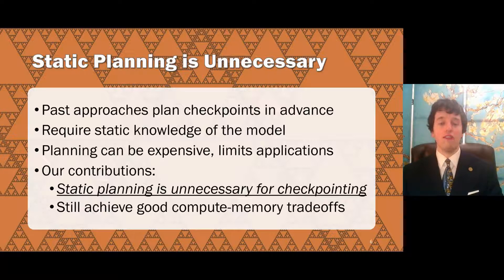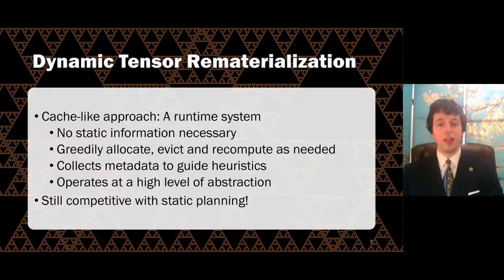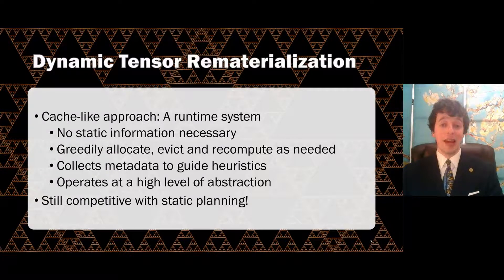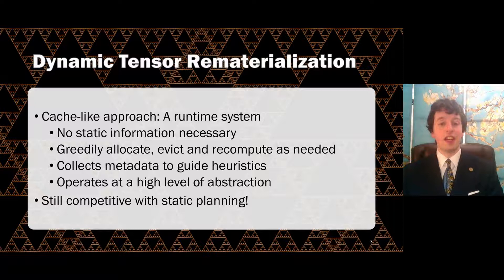Are those just costs of doing business? Must we accept the limitations of static planning? Our work shows that, in fact, we do not. And in the rest of the talk, I will describe our method for choosing values to recompute without static planning that nevertheless achieves comparable computation memory trade-offs. Rather than static planning, our technique approaches the problem of checkpointing as a dynamic analysis, collecting information at runtime in order to have access to more precise information and make fewer assumptions. Hence, we call our method dynamic tensor rematerialization, or DTR for short.